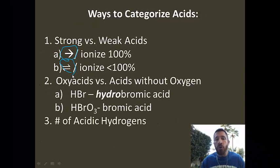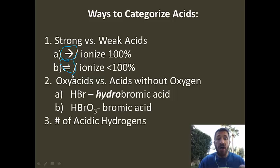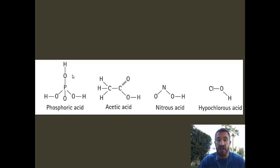Now we're going to talk about a third category, which we'll get to in a little bit — a way to categorize acids by the number of acidic hydrogens. First, let's go back to our discussion of oxyacids and non-oxyacids.